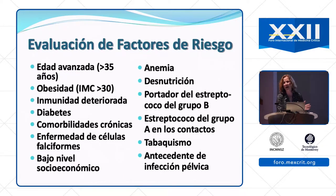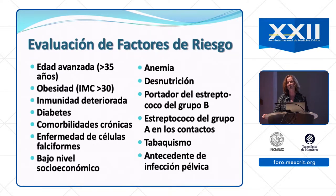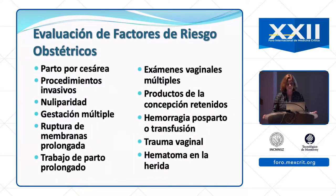Personal risk factors include advanced age (in obstetrics, that means 35), obesity, immune compromise, diabetes, heart or liver failure, chronic comorbidities, sickle cell disease, low socioeconomic level, anemia, and malnutrition. Unique factors for pregnant women include being a carrier of group B strep or having group A strep in close contacts. Smoking and prior infection also increase risk.